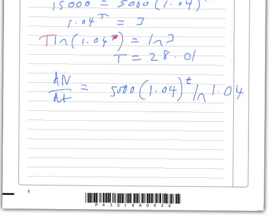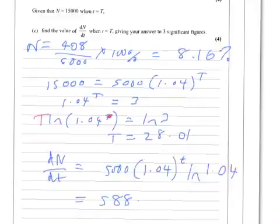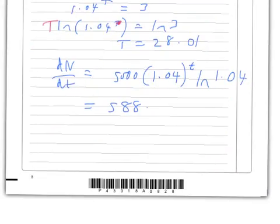We know that T is 28.01, so we substitute that in and get 588 point something. Let's see what we're answering here. Find the value to three significant figures, so 590 would be the answer to three significant figures.